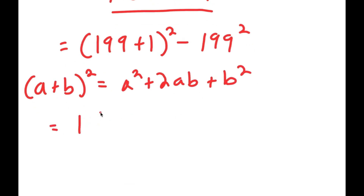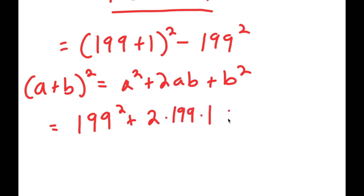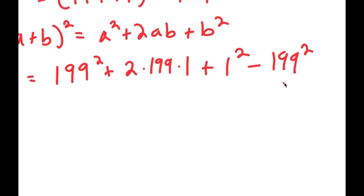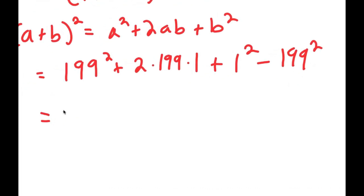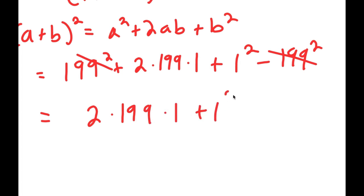So 199 plus 1 squared, I'm going to write as 199 squared plus 2 times 199 times 1 plus 1 squared, and at the end I have minus 199 squared. Now this is equal to — you can cancel the 199 squared terms — 2 times 199 times 1 plus 1 squared.